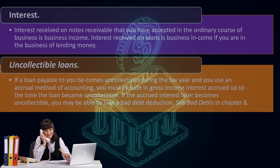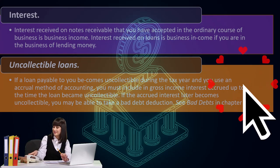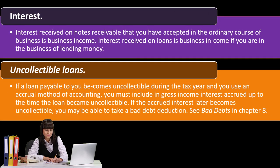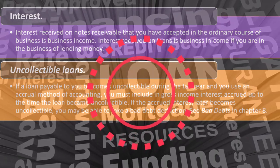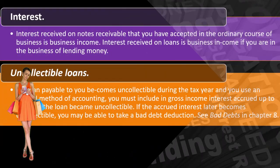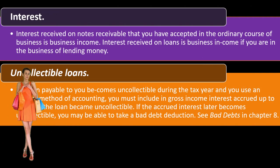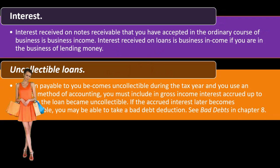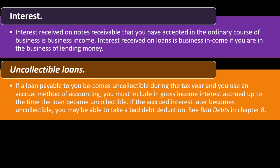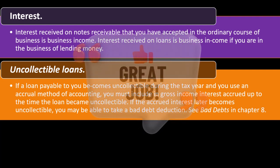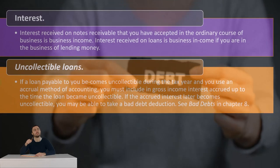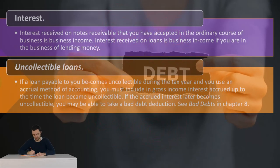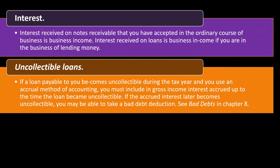Uncollectible loans: if a loan payable to you becomes uncollectible during the tax year and you use an accrual method of accounting, you must include in gross income interest accrued up to the time the loan became uncollectible. If the accrued interest later becomes uncollectible, you may be able to take a bad debt deduction. On an accrual system, you may have recorded income at the point you did the work, and if you don't actually get paid, you didn't really earn the income.